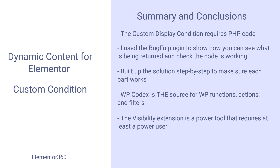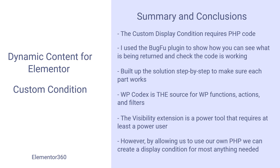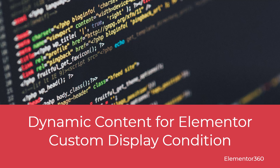To bring it back to Dynamic Content for Elementor: I think of the visibility extension as a power tool. It can be hard for a new WordPress user to understand, and even experienced users can make mistakes with custom PHP code. However, by allowing custom PHP, we can create display conditions for almost anything you might need — taking Elementor beyond being just a page builder and adding application-like functionality. I hope this tutorial and step-by-step recreation of the process helps you when working on something similar. Did the steps make sense? Do you use a different process? Feel free to leave a comment below.